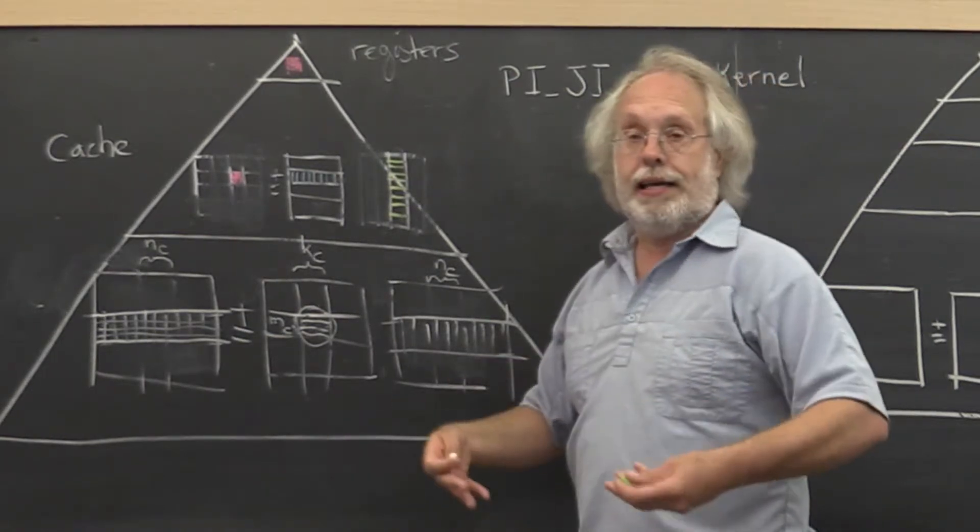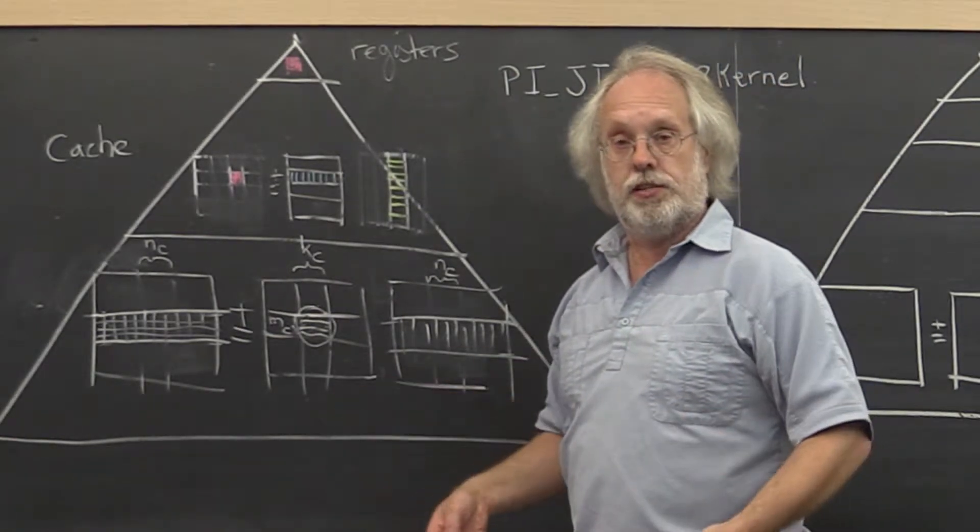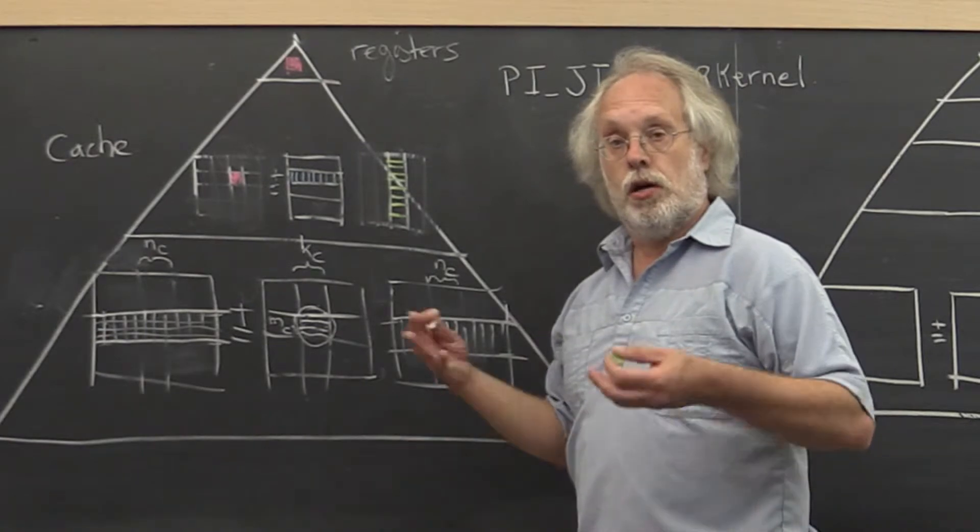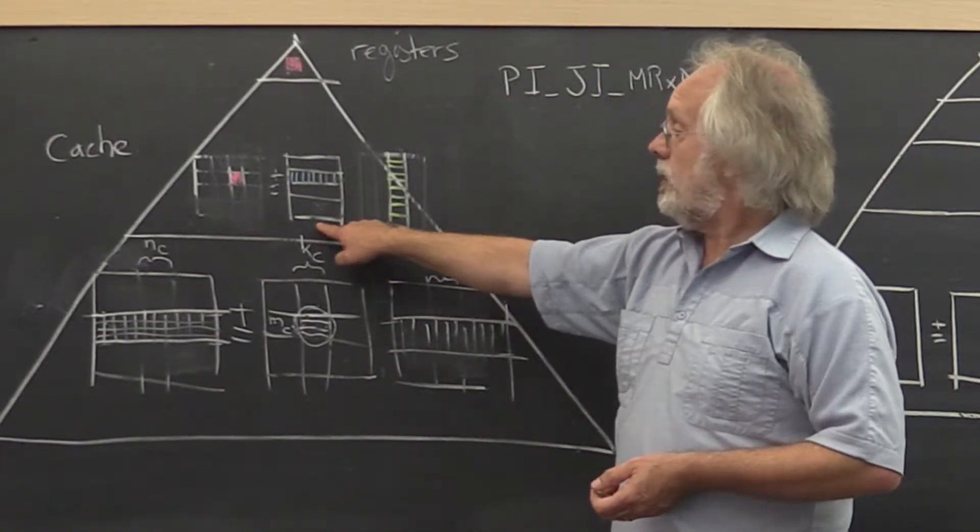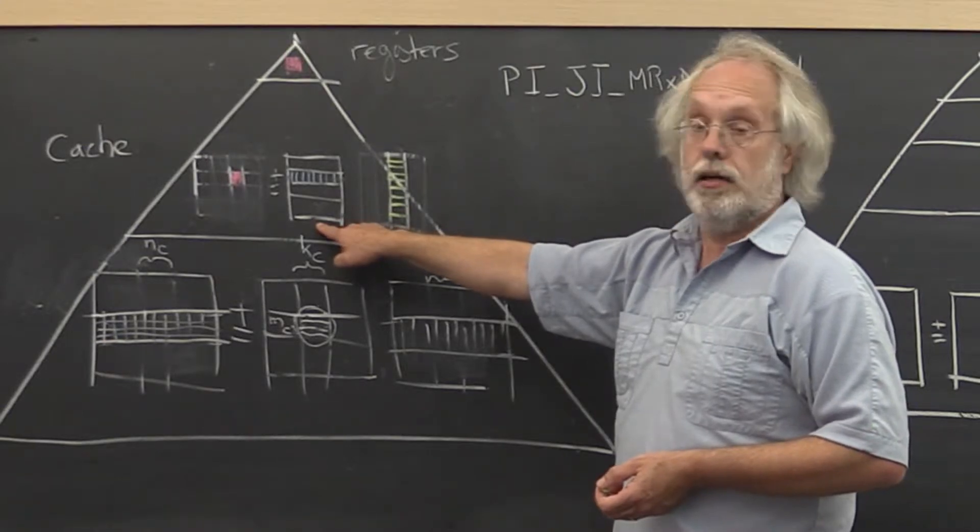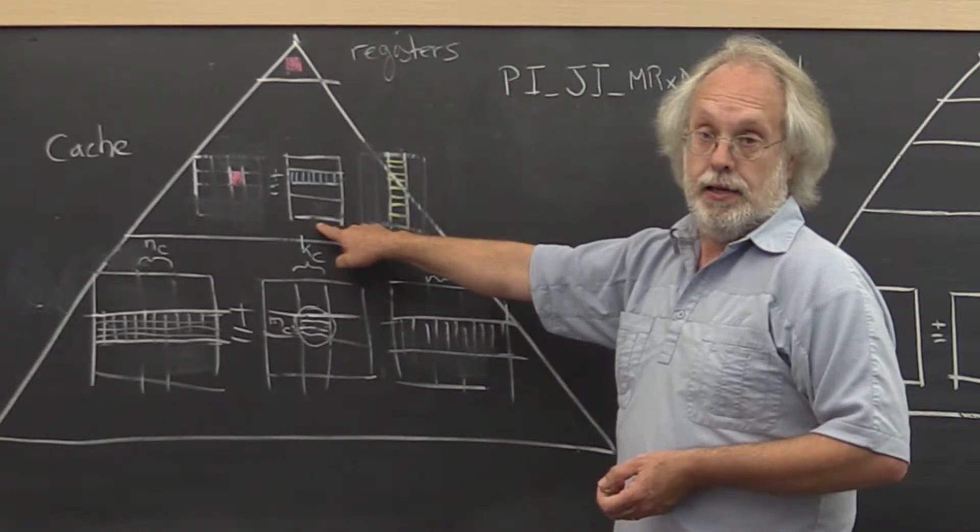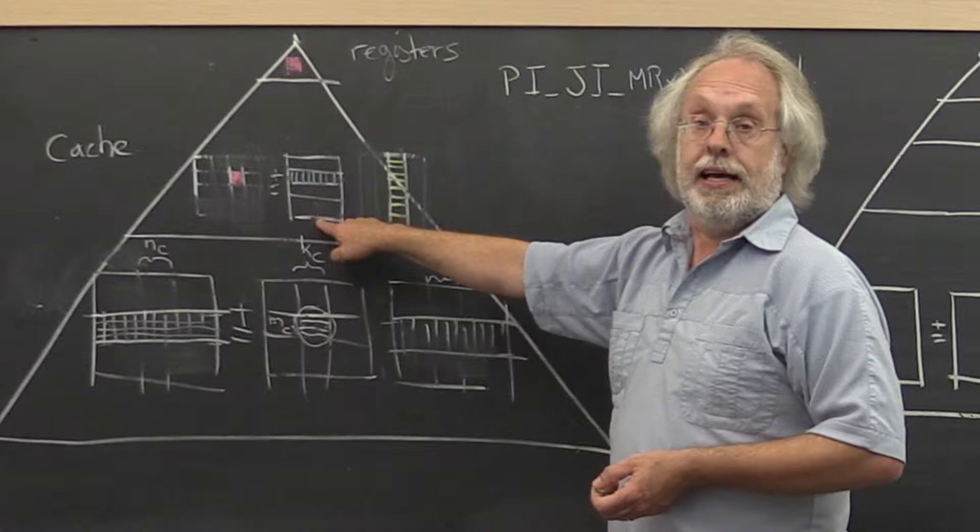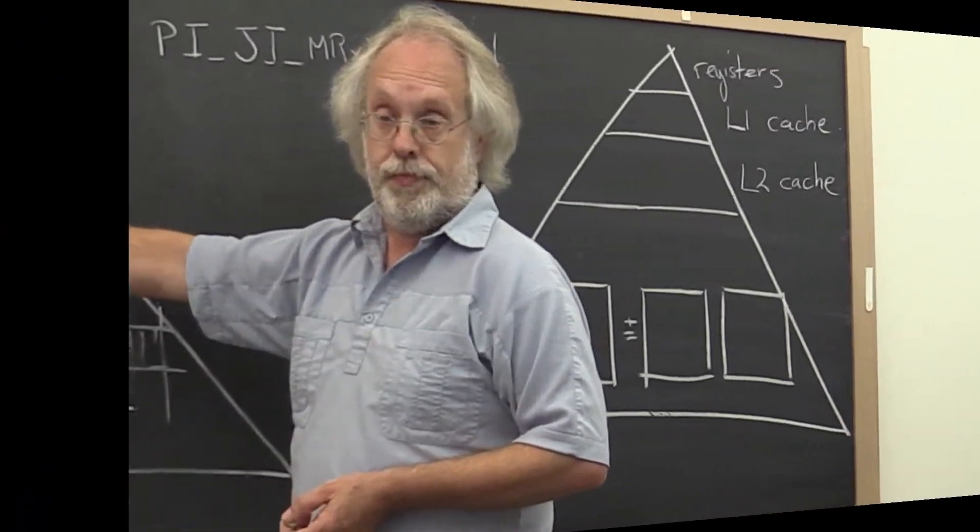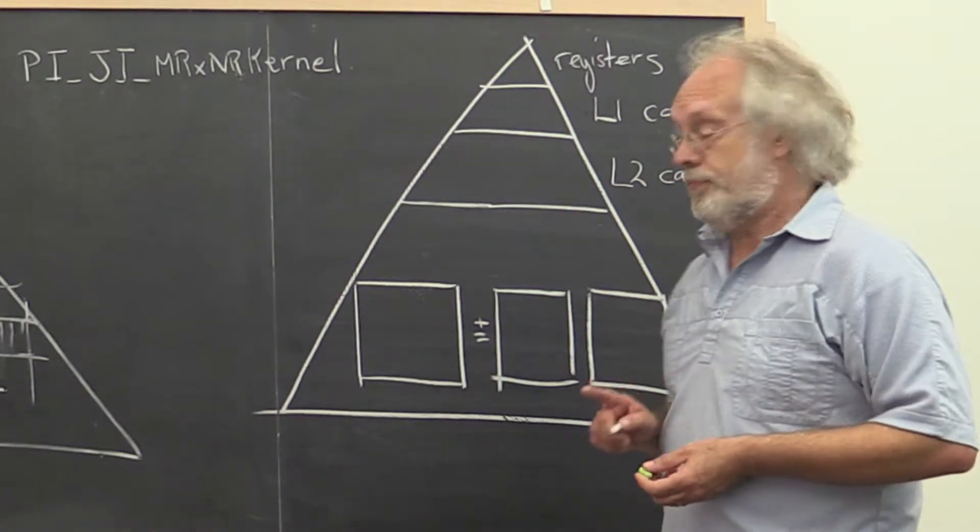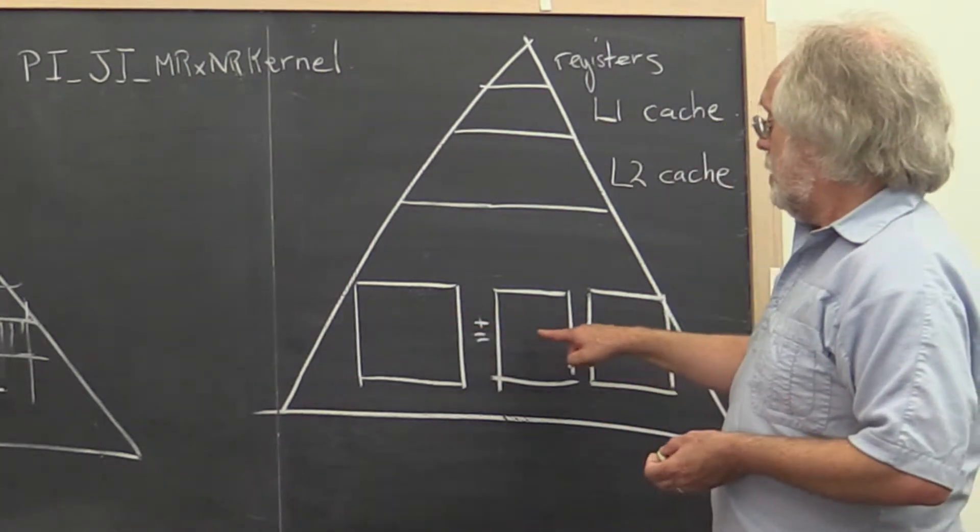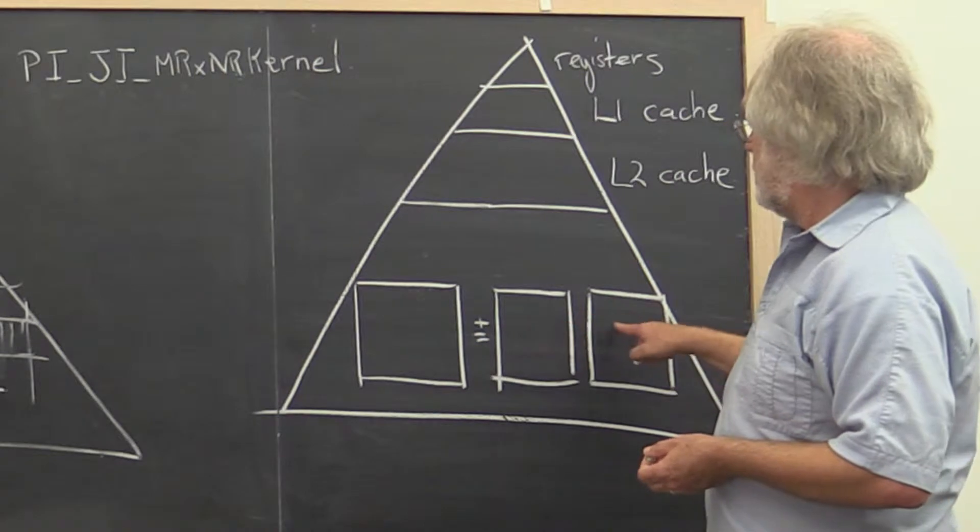Let's try to go back and revisit all of this so that it becomes really clear what happens. And along the way, remember that we empirically determined that the block of A should be in the L2 cache. Here we have a matrix-matrix multiply. C is updated by multiplying A times B.